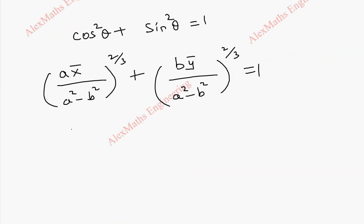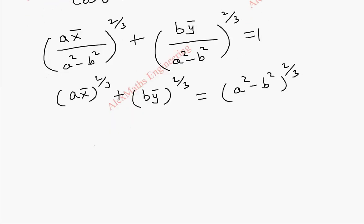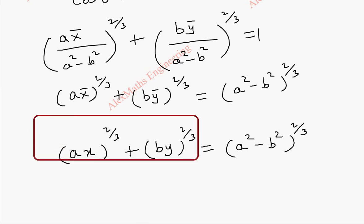Taking the denominator (a² minus b²)^(2/3) to the other side, and changing x̄ and ȳ to x and y, we get the equation of the evolute: (ax)^(2/3) plus (by)^(2/3) equals (a² minus b²)^(2/3). And this is the required equation of the evolute.